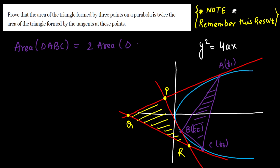We need to prove that the area of triangle ABC is twice the area of triangle PQR, and this is valid for any parabola.